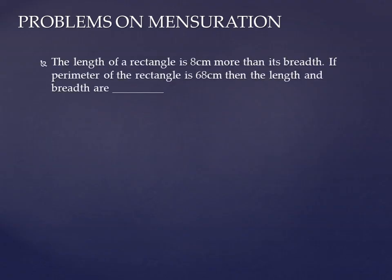First one: the length of a rectangle is 8 centimeters more than its breadth. If the perimeter of the rectangle is 68 centimeters, then find the length and breadth. Observing this question, they have given a rectangle and saying that its length is 8 centimeters more than its breadth. So here he is comparing the length with the breadth.